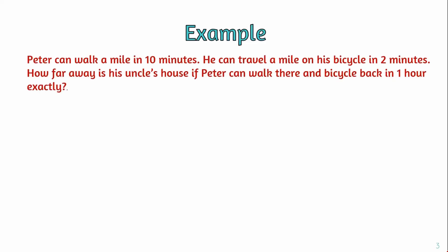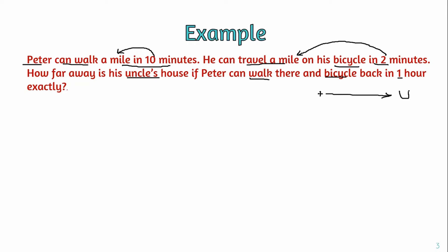Here is an example: Peter can walk a mile in ten minutes. He can travel a mile on his bicycle in two minutes. How far away is his uncle's house if Peter can walk there and bicycle back in exactly one hour? In this problem, Peter's walking speed is one mile in ten minutes, and his cycling speed is one mile in two minutes, and the total time is one hour.